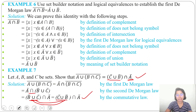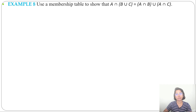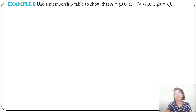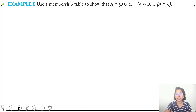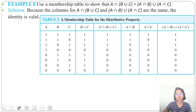We can also prove set identities by membership table. A membership table is like the truth table — in truth tables we use true/false, here we use 0 and 1. Example 8 uses a membership table to show that A ∩ (B ∪ C) = (A ∩ B) ∪ (A ∩ C). We need to create membership tables for both sides; if values are the same, both are equivalent.